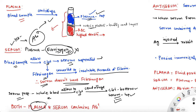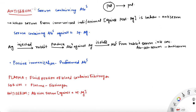Plasma and serum both contain antibodies — this is also a common question I receive: does serum have antibodies as well? Yes, both plasma and serum contain antibodies. Now comes the interesting part — we are talking about anti-serum. You just said serum has antibodies and now I'm saying anti-serum has antibodies too — how is that different? I'll tell you.